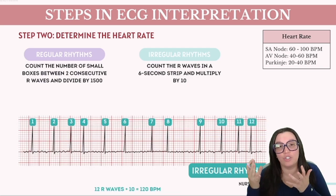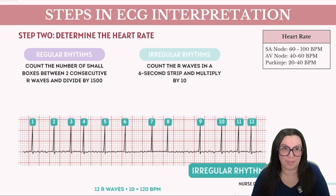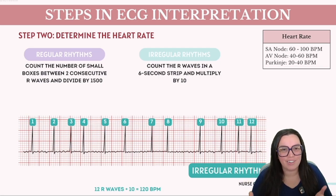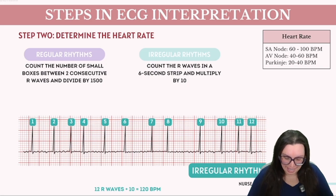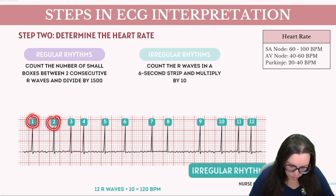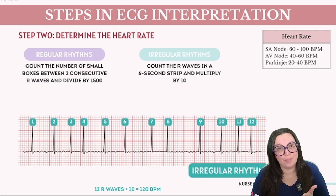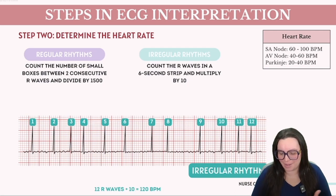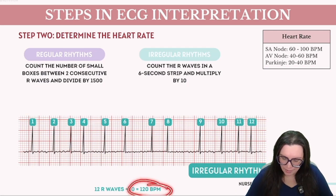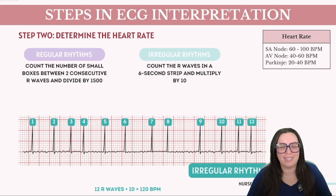For irregular rhythms, count the number of R waves within the six-second strip and multiply by 10. For example, if we count 12 R waves, we multiply 12 by 10, giving us a heart rate of 120 beats per minute.